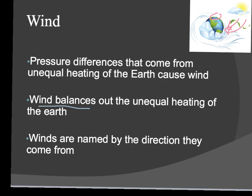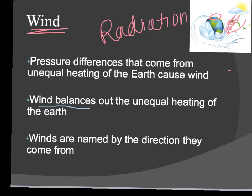Wind is caused by the pressure difference that comes from that unequal heating of the Earth. And if you remember, that's called radiation — when the sun heats the Earth. And when it moves around as wind, we have convection.